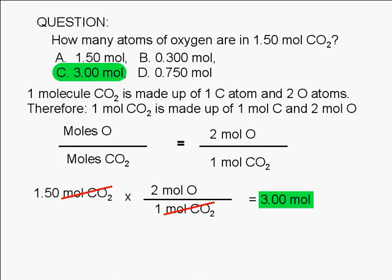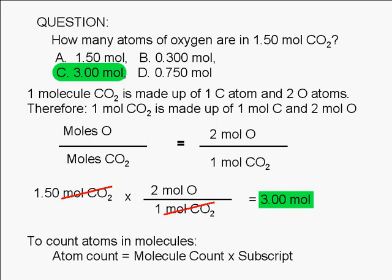To summarize, if we want to count atoms in a molecule, we simply multiply the number of molecules by the subscript of the atom we're interested in. In the case we have here, the number of moles of carbon dioxide is essentially just multiplied by 2, which is the subscript of oxygen in carbon dioxide, in order to give the number of moles of oxygen.